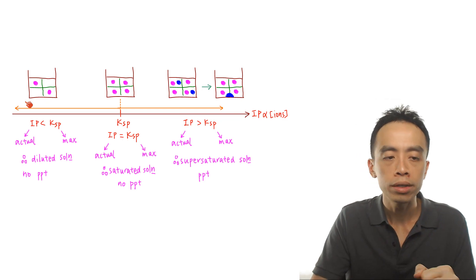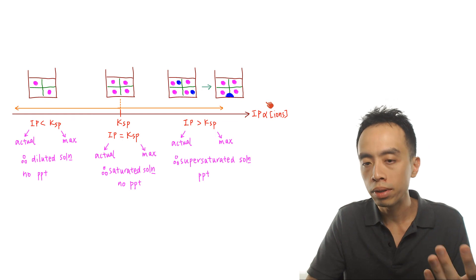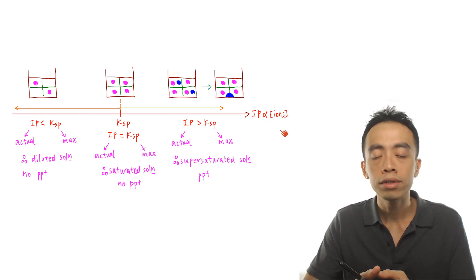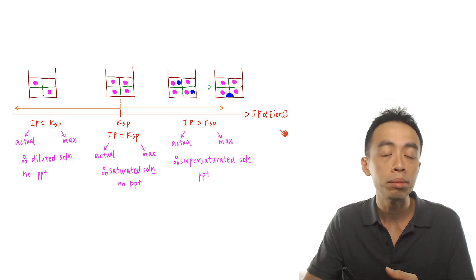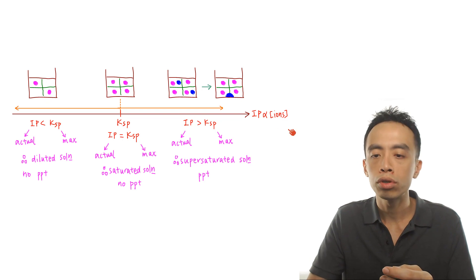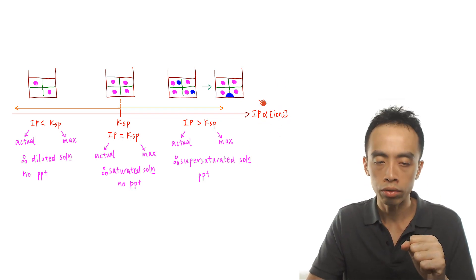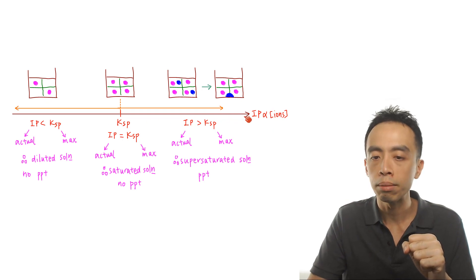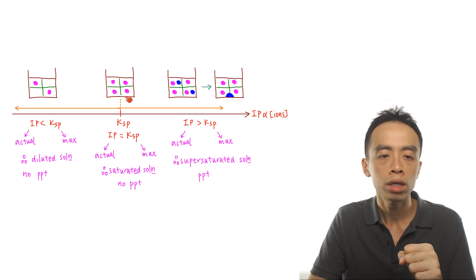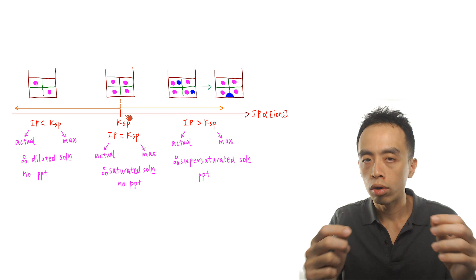We can visualize this: we have a number line representing ionic product. Ionic product is related to ion concentration — the fewer ions you have, the smaller the IP value; the more ions in solution, the higher the IP value. So IP varies along the number line, and along this number line there is one specific point which is the Ksp. So Ksp is an actual point along this number line — that is the relationship between IP versus Ksp.